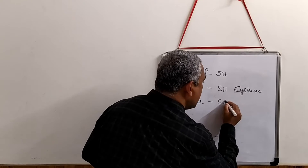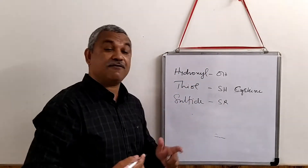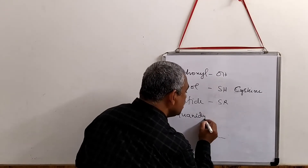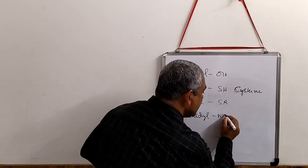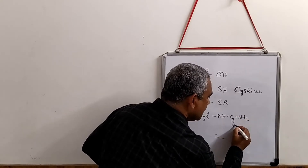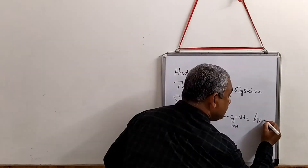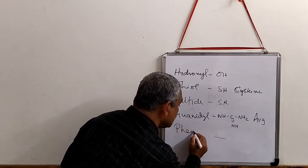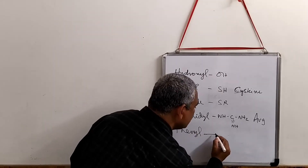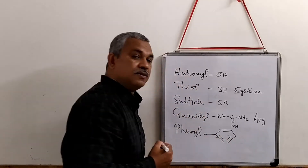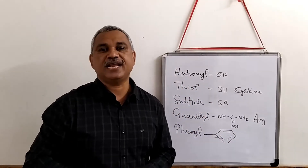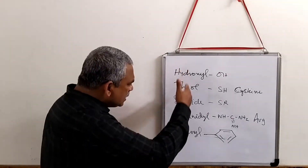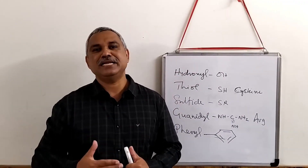There are certain amino acids with a sulfide group - for example, SR - methionine has a sulfide functional group. There are certain amino acids with a guanidine group (NH-CNH2-NH) - a classic example is arginine. The fourth category has a phenyl group - examples like tryptophan and tyrosine are amino acids having a phenyl group as a functional group.